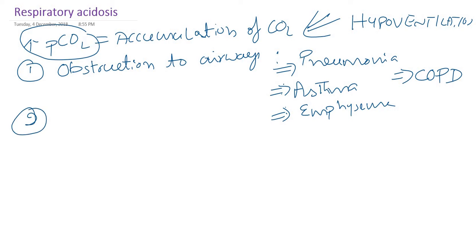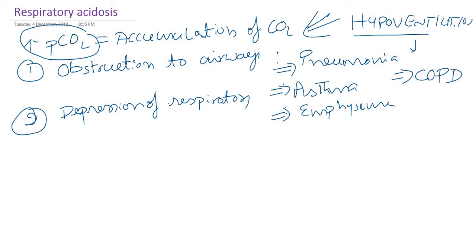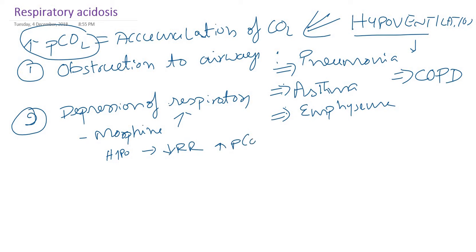Another reason could be suppression or depression of respiration, which also causes hypoventilation. For example, a patient after an operation may be sedated — we give morphine, which relieves post-operative pain. Morphine and barbiturates actually suppress the respiratory center, so there will definitely be hypoventilation, a decreased respiratory rate, and increased partial pressure of carbon dioxide, leading to respiratory acidosis.